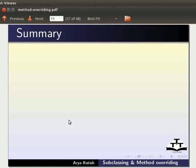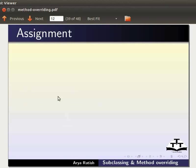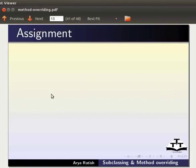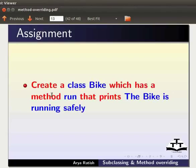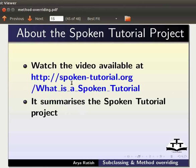Let us summarize. In this tutorial, we have learnt about subclassing and method overriding. As an assignment, create a class Vehicle which has a method Run that prints 'the vehicle is running'. Also create a class Bike which has a method Run that prints 'the bike is running safely'. The output should be: the bike is running safely.